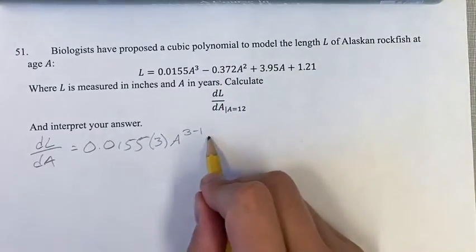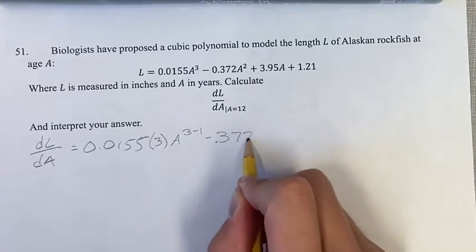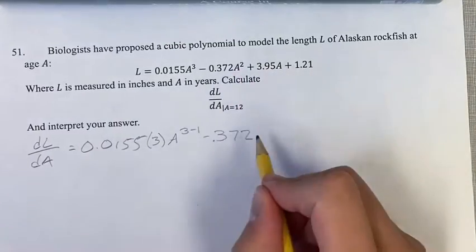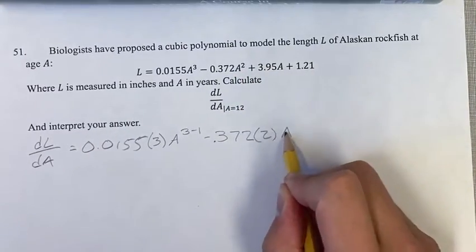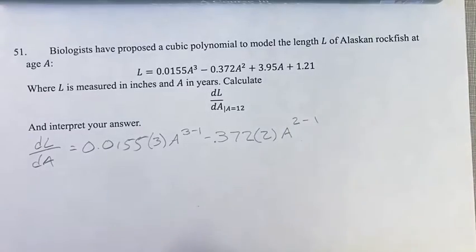With this term, bring the coefficient out in front, 0.372, multiply it by the exponent, and your new exponent is the old one minus one.